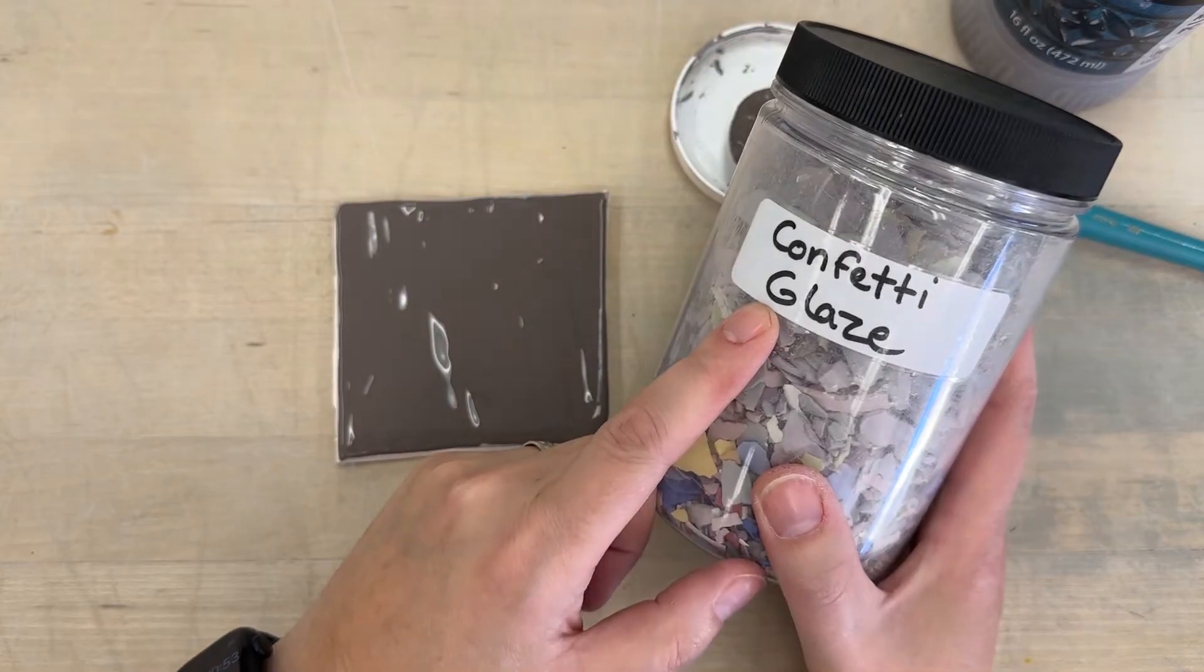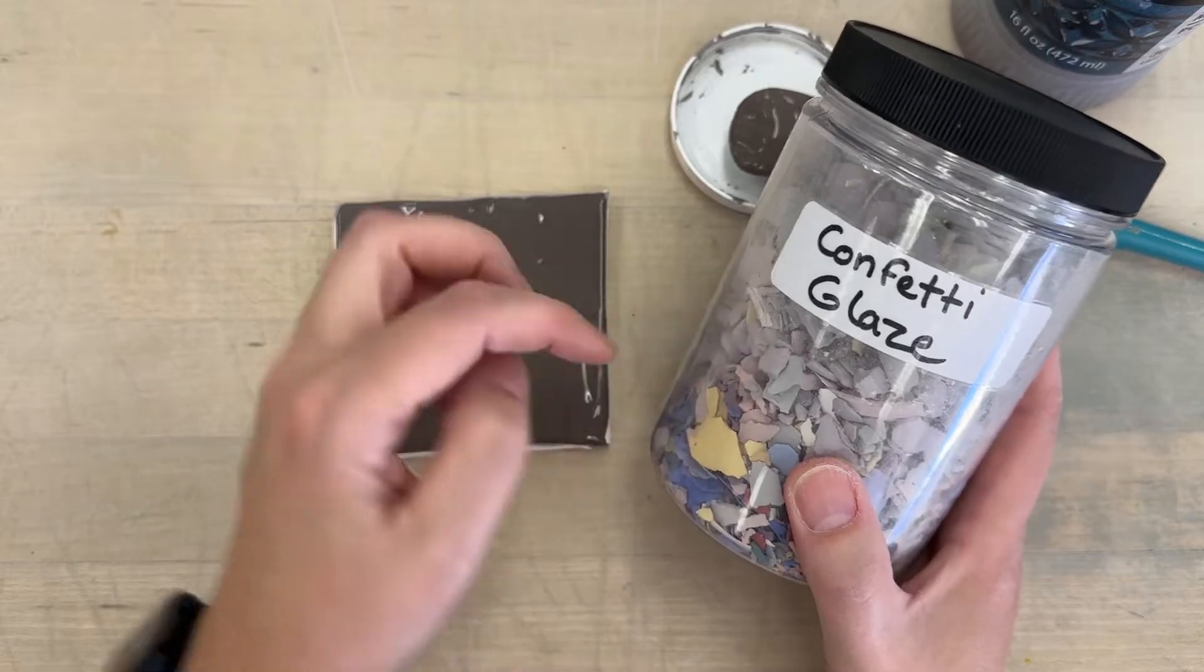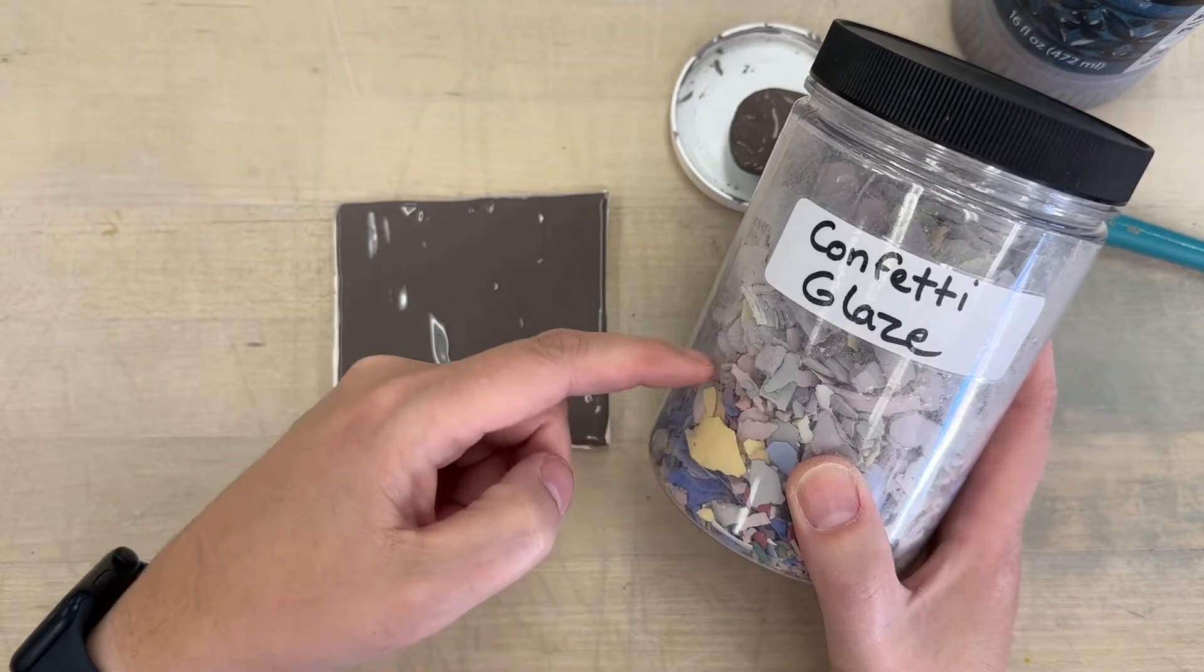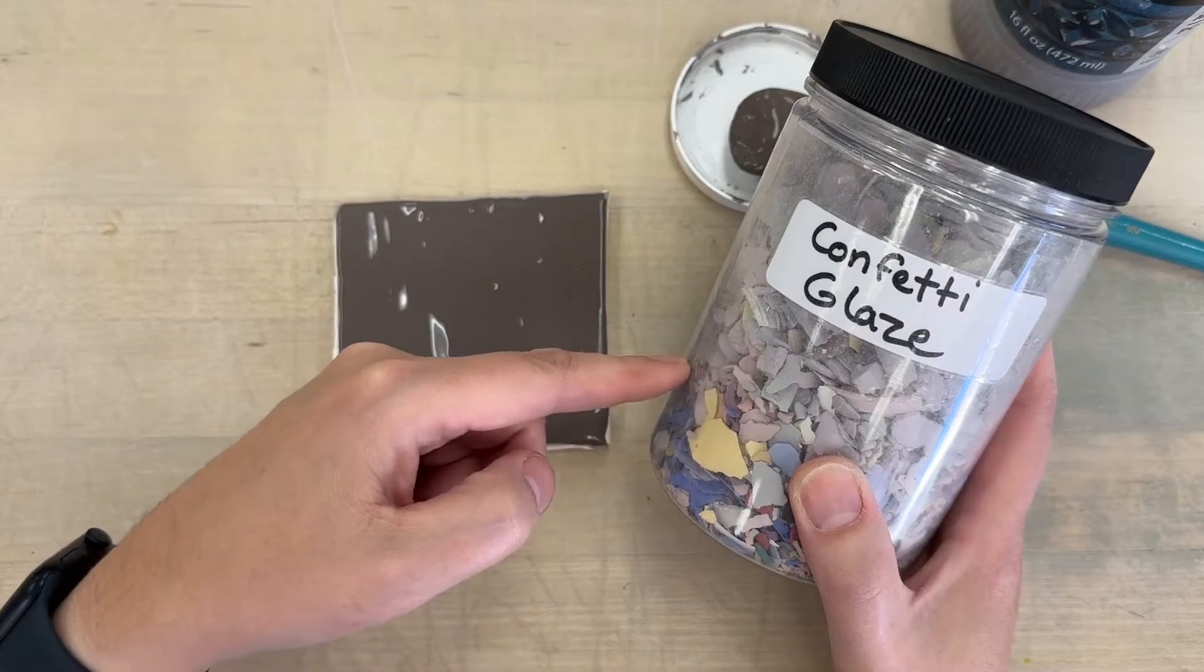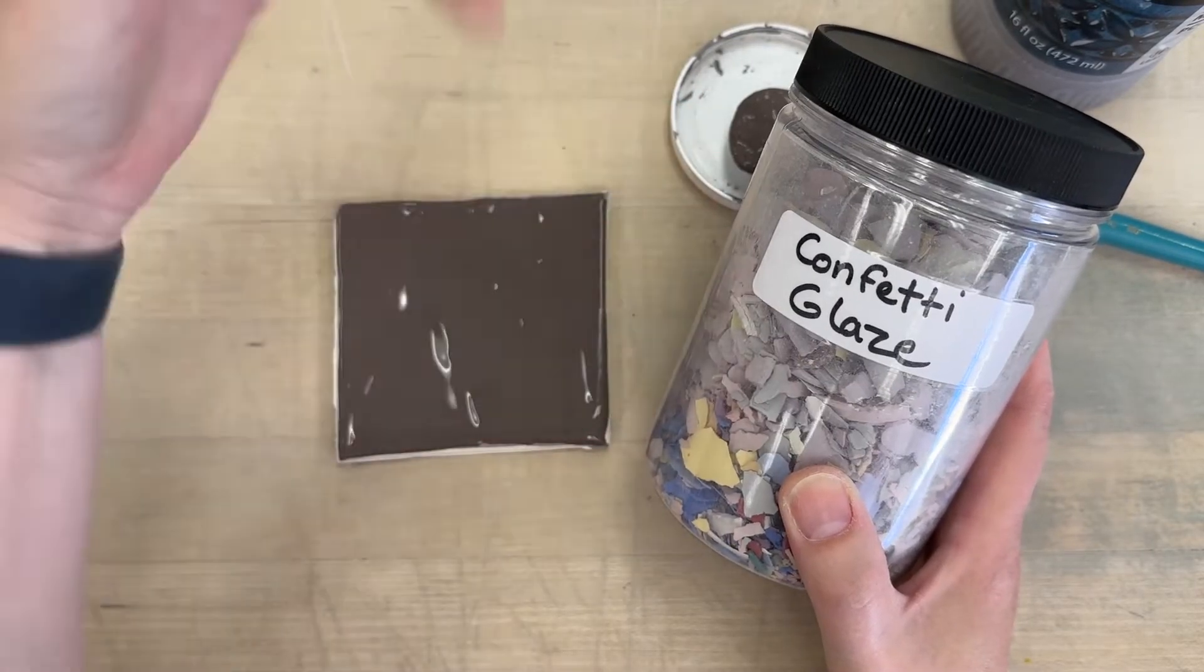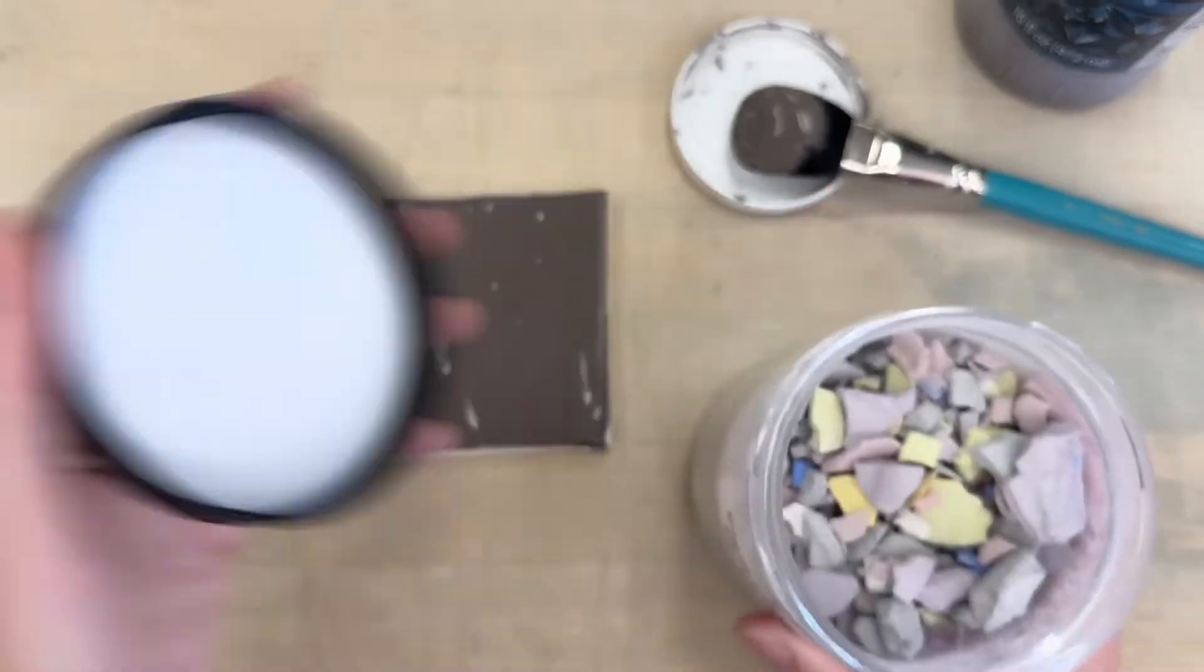Then you want to find our confetti glaze little container. This is just all of the leftover chunks of glaze and underglaze from when you use up one of the bottles. I just squeezed it all out and dumped it in here.